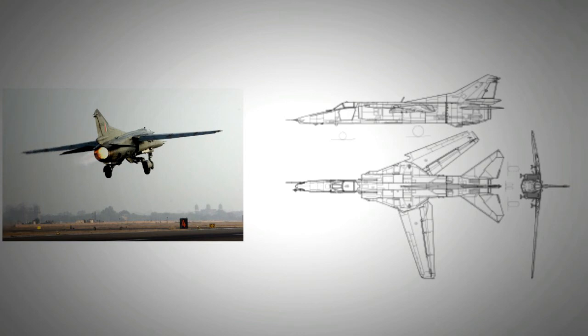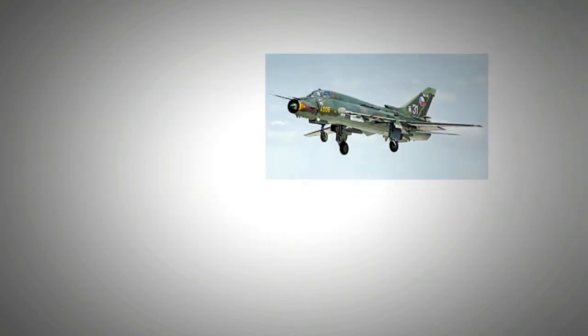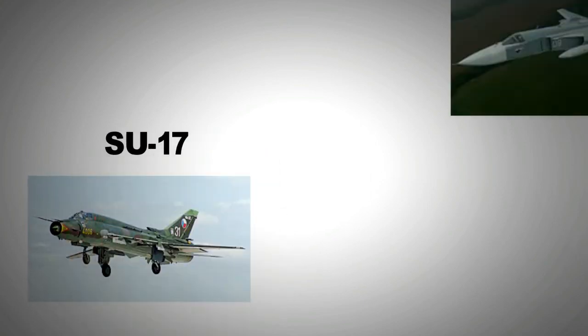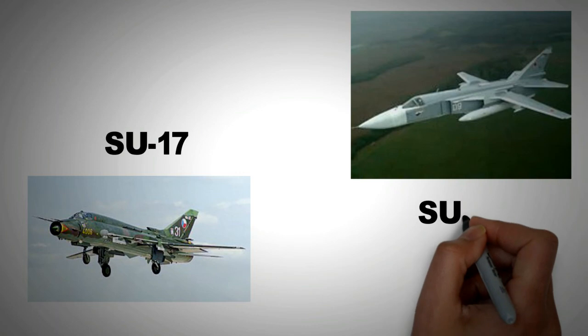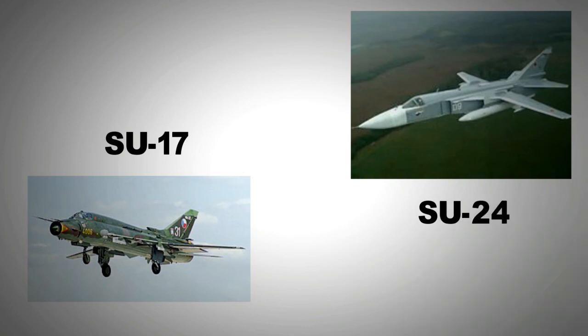Some variable sweep wing aircraft were also produced by Russia, such as the Sukhoi Su-17 and the Su-24, but they also adopted another approach to improve flight dynamics at supersonic speeds. They rolled out the forward swept aircraft.